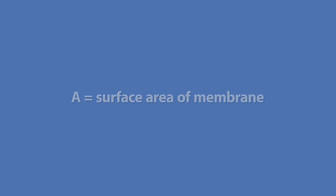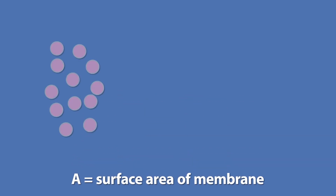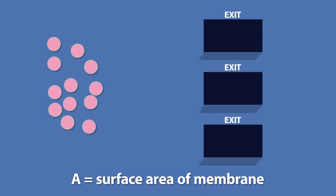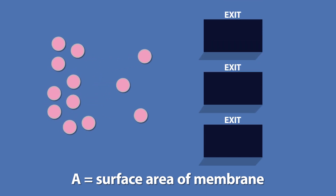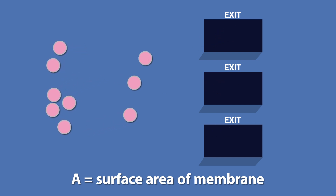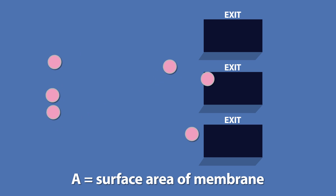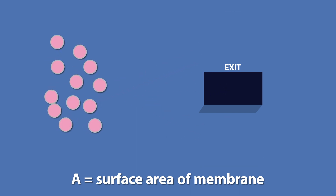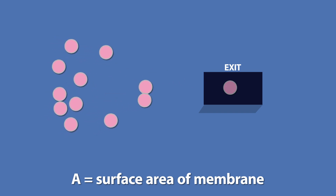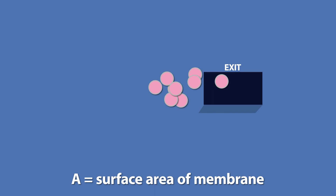A is the area that the molecules have to interact with as they're crossing from high concentration to low. To think about this, let's imagine if we were at a concert. At the end of the show, all the exits are open and there are lots of spaces for people to travel through, allowing them to diffuse quickly out of the concert arena. But if only one exit is opened, there's going to be a backup and it's harder for people to diffuse out. The same is true for molecules — if they have a large area to interact with, they'll diffuse faster than if they only have a small area.